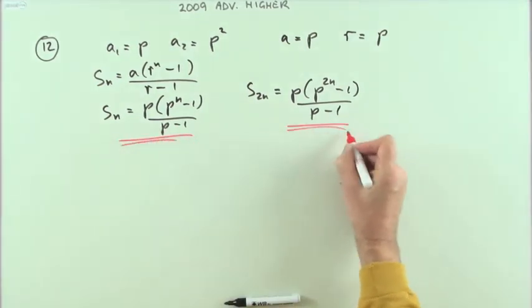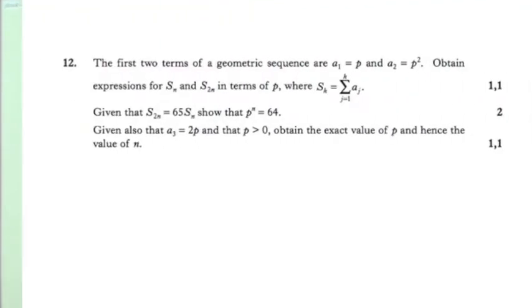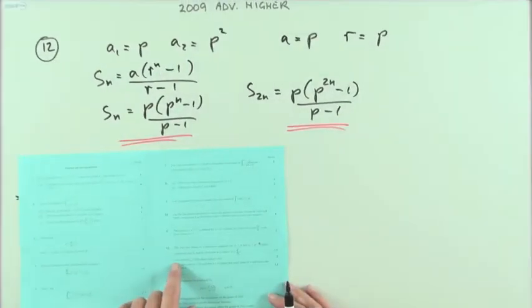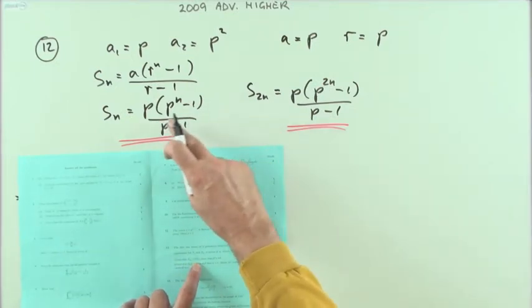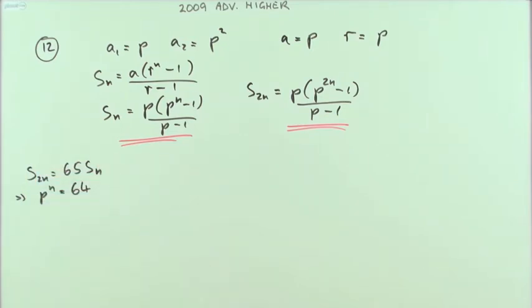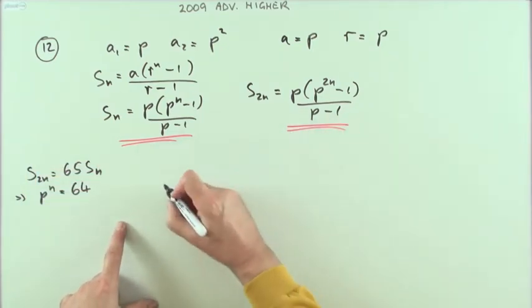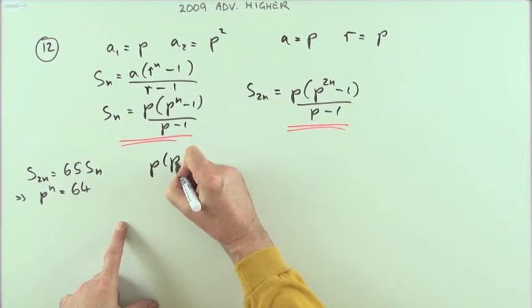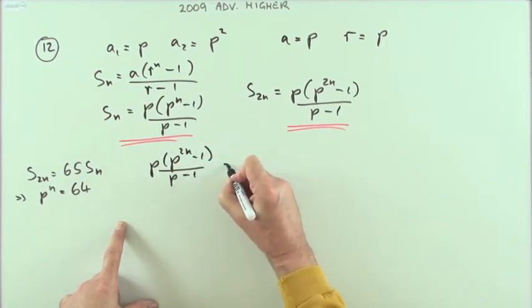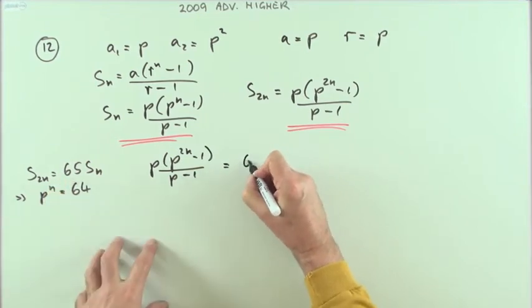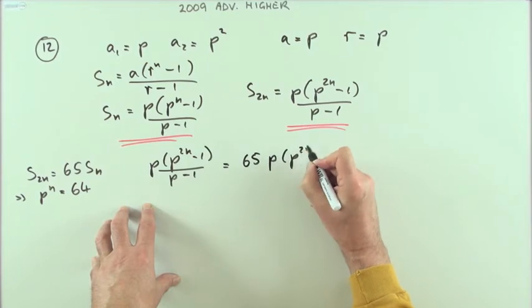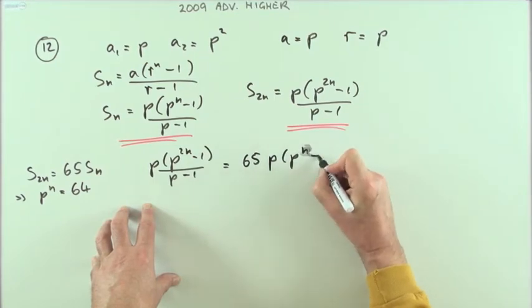Given that s_2n is 65 times s_n, show that p^n is 64. So I've got p(p^2n - 1)/(p - 1) equals 65 times p(p^n - 1)/(p - 1).